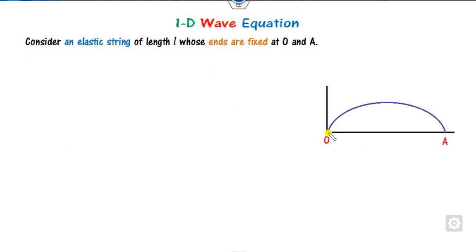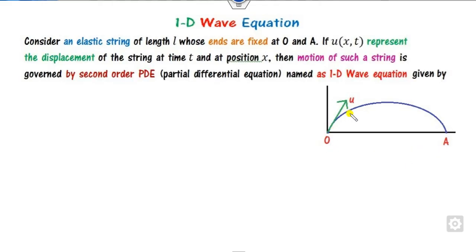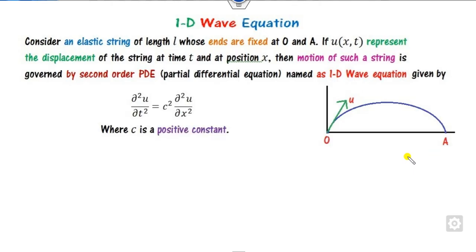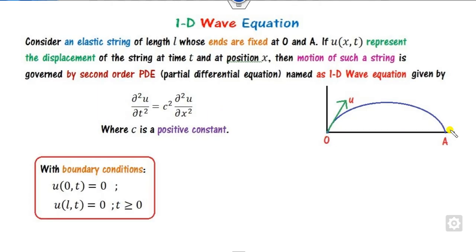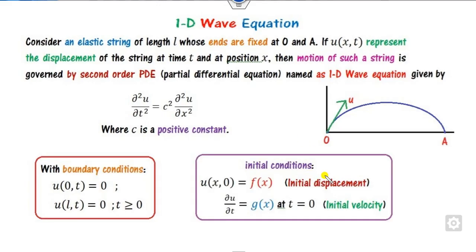The one-dimensional wave equation considers a string with two fixed ends O and A of length L. The displacement of the string can be easily measured with the help of this wave equation. Since we consider only one dimension, x, this is called the one-dimensional wave equation. The two fixed ends give us the boundary conditions. We can also impose initial conditions: the initial displacement f(x) and the initial velocity g(x), which can be sine, cosine, or polynomial forms.